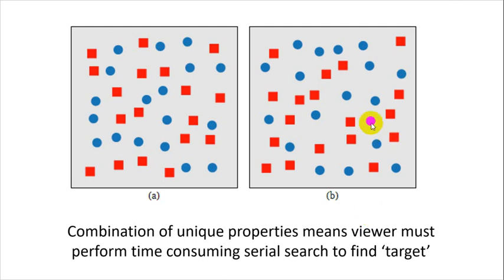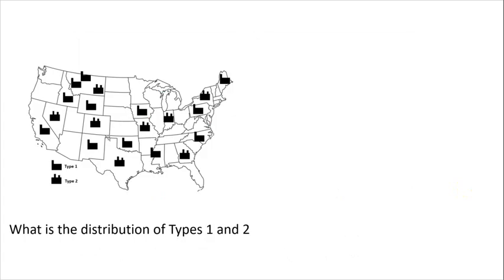It's a lot harder to spot, in my humble opinion. Okay, here's your task. We're encoding using shape. We have two types of factories. What's the distribution? Or count. How many type ones are there? And now look.